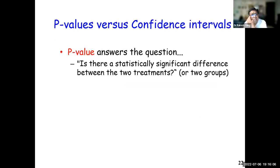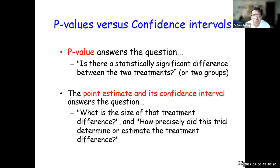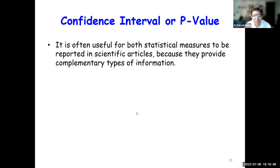The p-value answers: is there a statistically significant difference between the two treatments? The point estimate and its confidence interval — the 95% CI — answers: what is the size of that treatment difference and how precisely did the trial estimate it? Both statistical measures are often useful to report together because they complement each other. In recent articles, especially RCTs, systematic reviews, and meta-analyses, both values are reported because they give complementary information about statistical significance and clinical relevance.